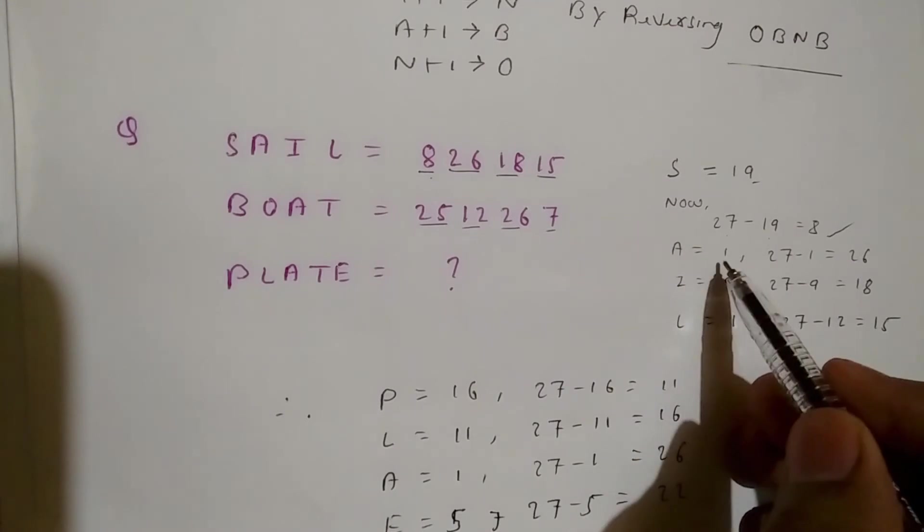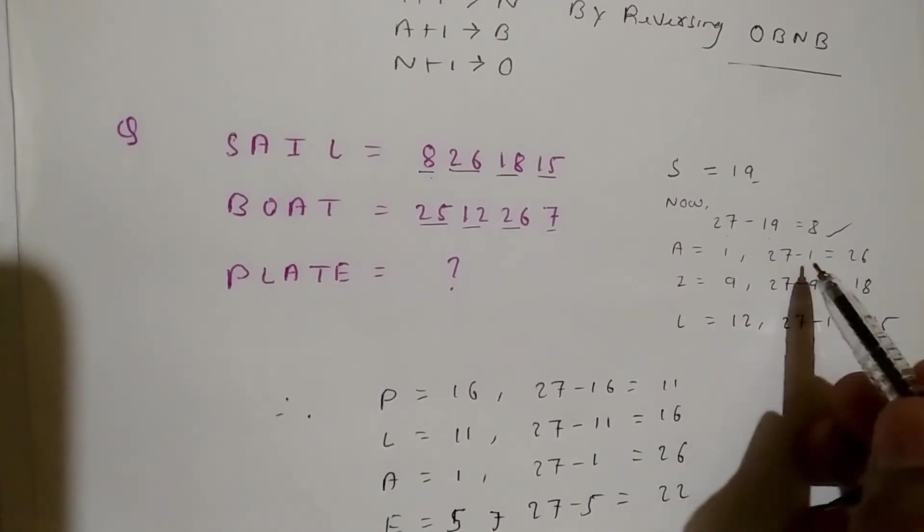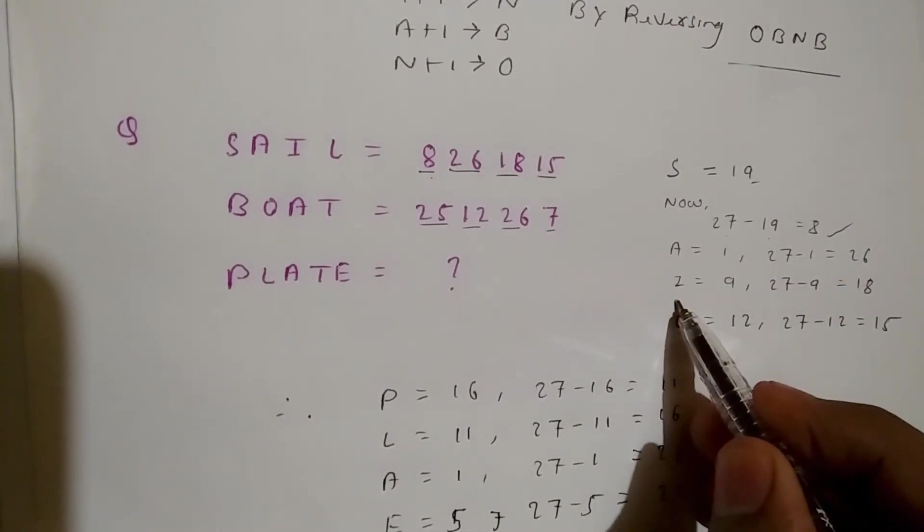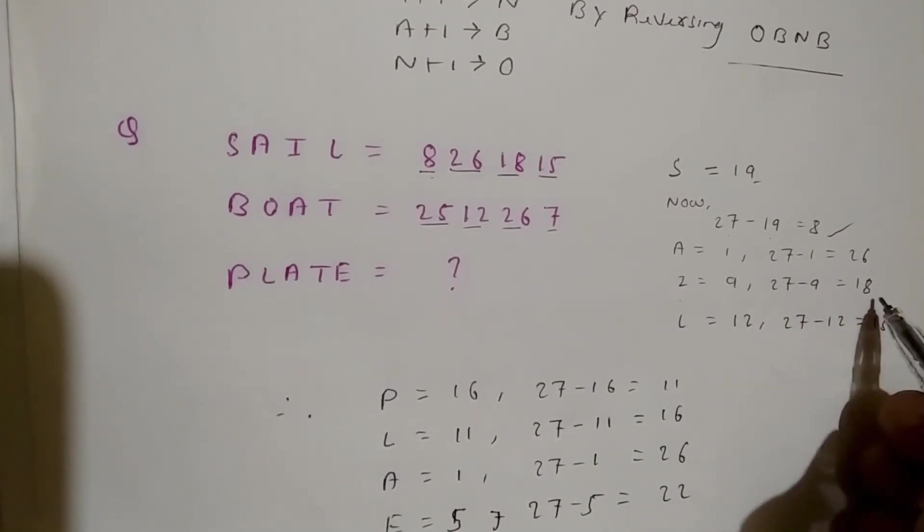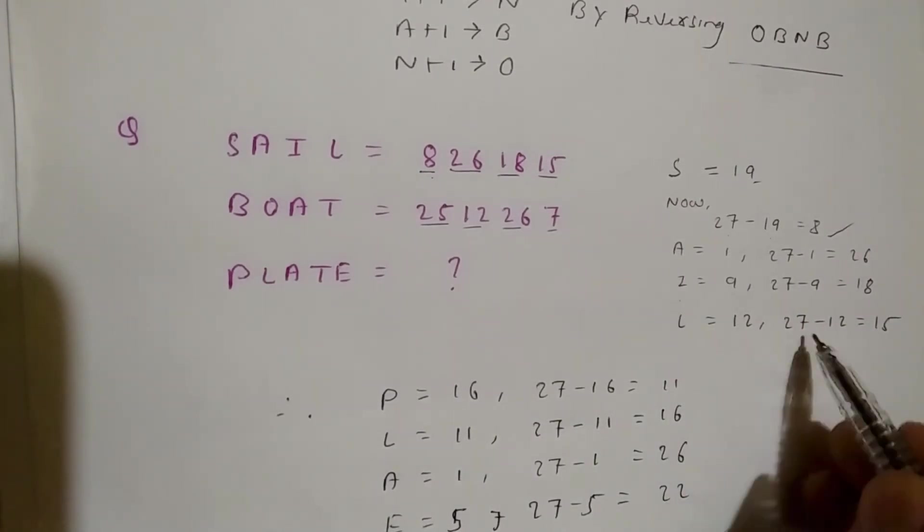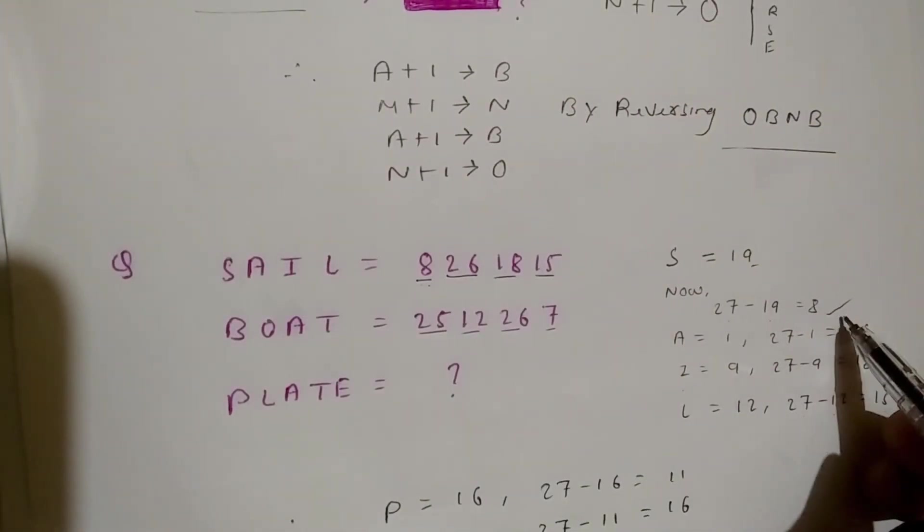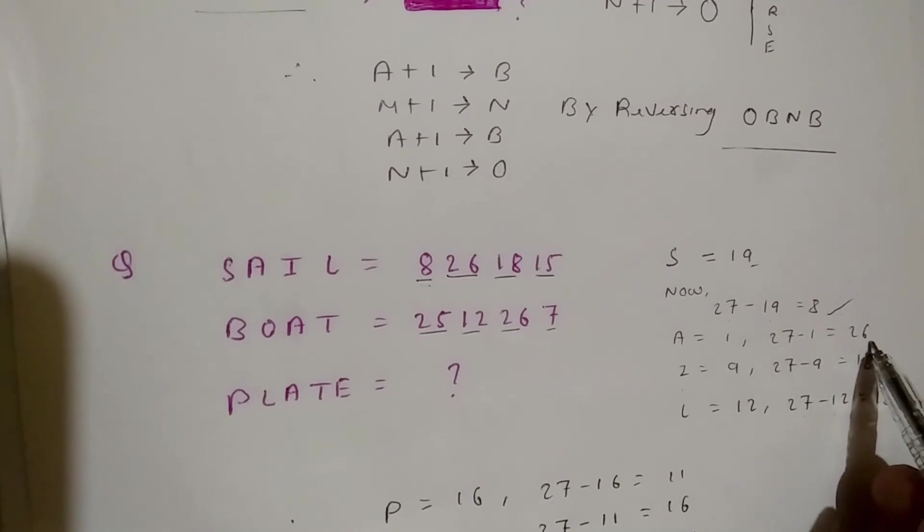A equals 1. 27 minus 1 equals 26. I equals 9. 27 minus 9 equals 18. L equals 12. 27 minus 12 equals 15. And we get these values: 8, 26, 18, 15. In the similar way we can get BOAT.